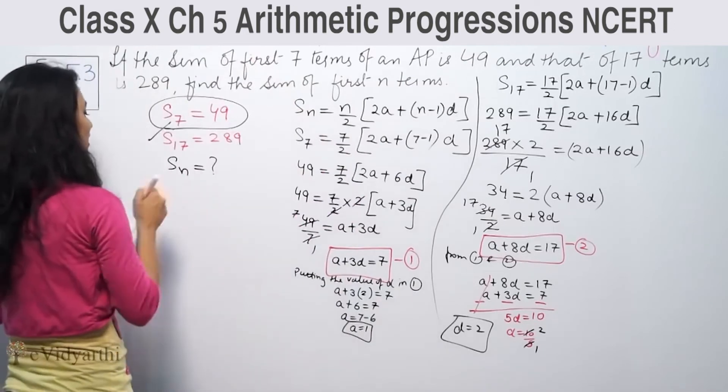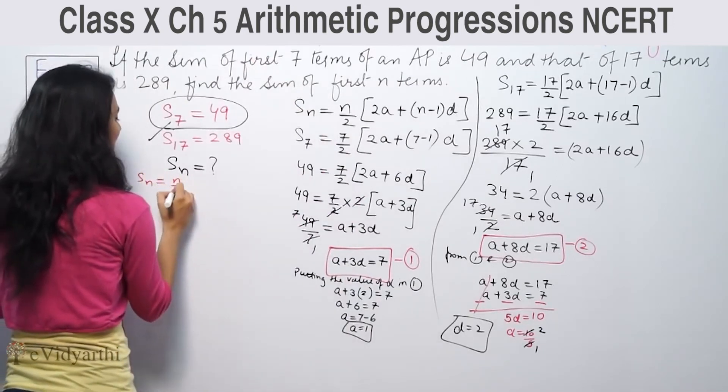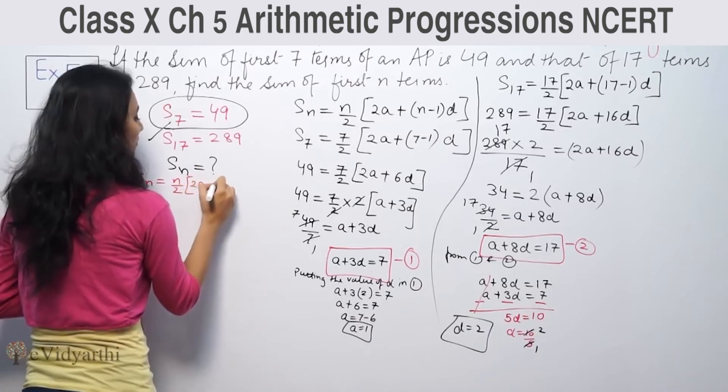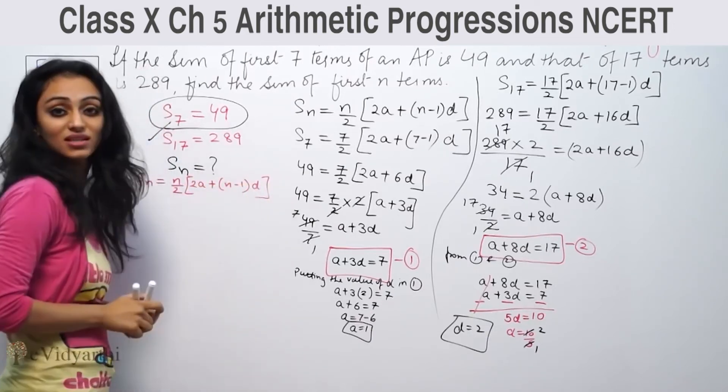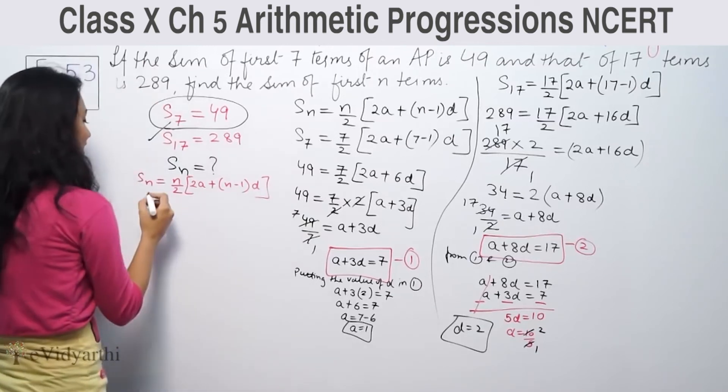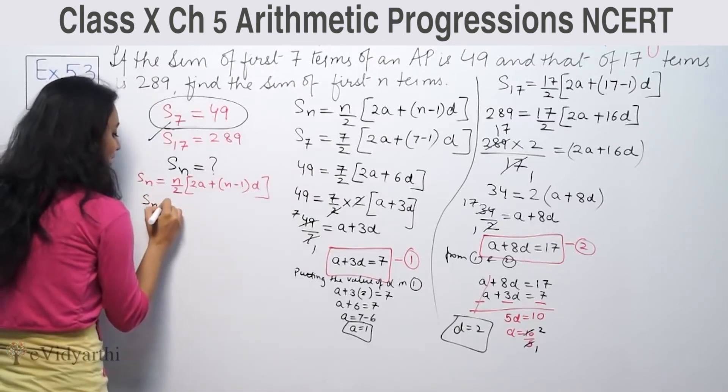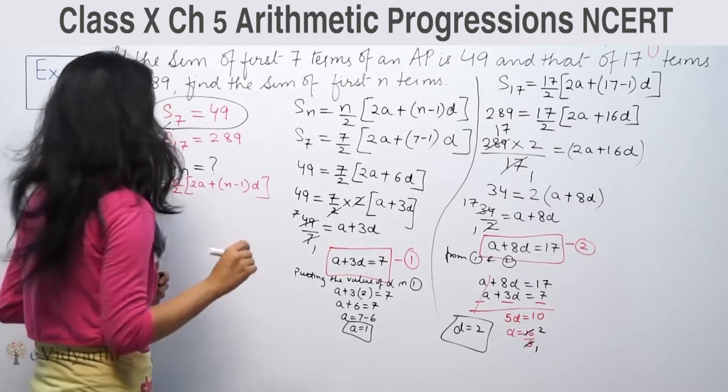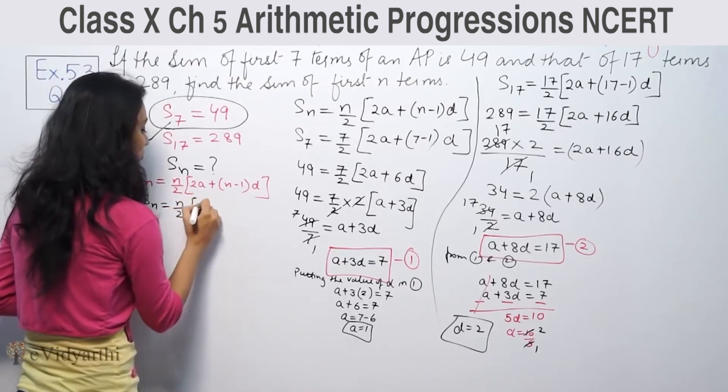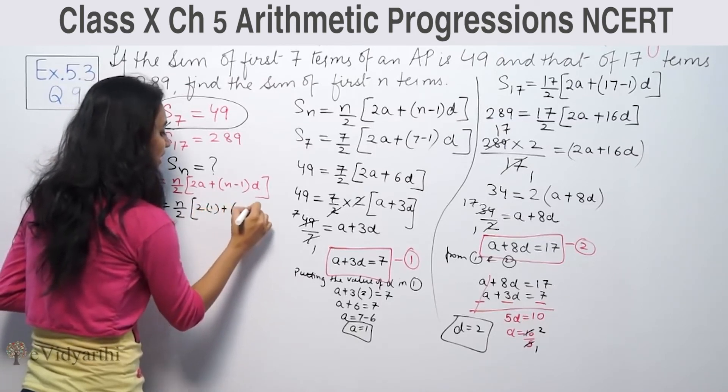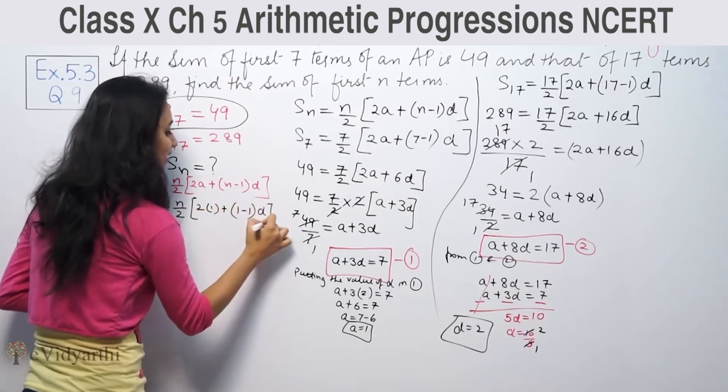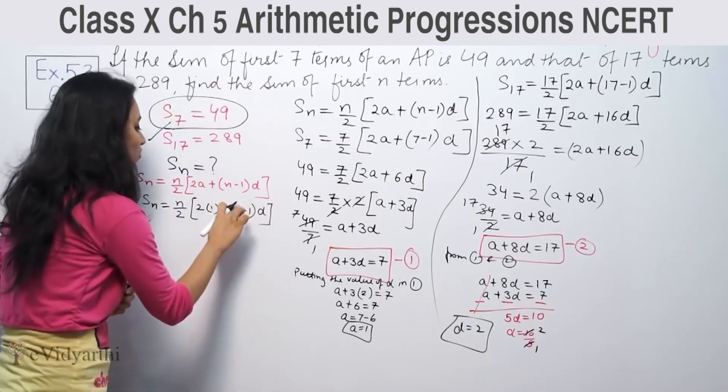For sum of n terms: Sn = n/2[2a + (n-1)d]. Substituting values: Sn = n/2[2(1) + (n-1)d].